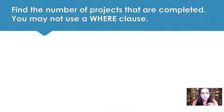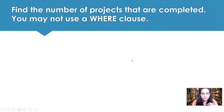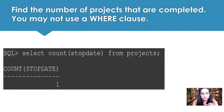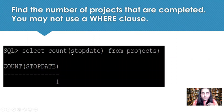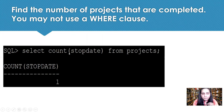The next query is: find the number of projects that are completed, but you may not use a WHERE clause. Normally it's easy with WHERE stop_date IS NOT NULL, but instead we can use the COUNT keyword, which is an aggregate function in SQL. It counts the values in a particular column, but only those values which are not null.